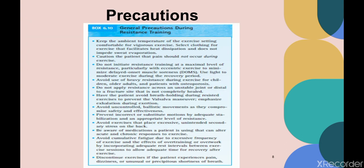Precautions during progressive resistance exercises include: maintain appropriate ambient temperature in the exercise setting; pain should not occur during exercises; do not initiate resistance training at a maximal level; avoid heavy resistance; do not apply resistance across an unstable joint; and have the patient avoid breath holding during resistance exercise to prevent the Valsalva maneuver, emphasizing exhalation during exertion.